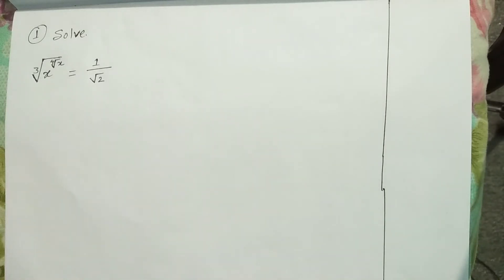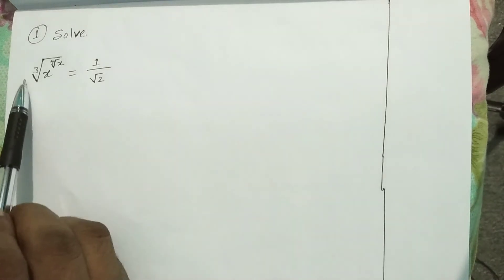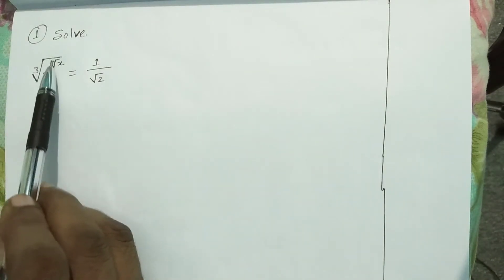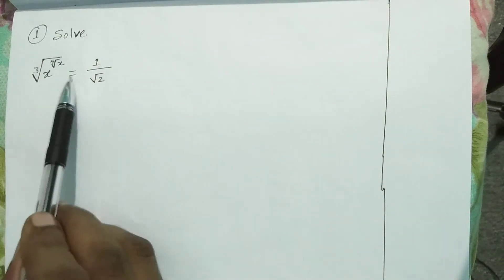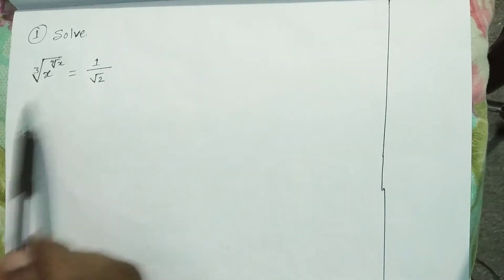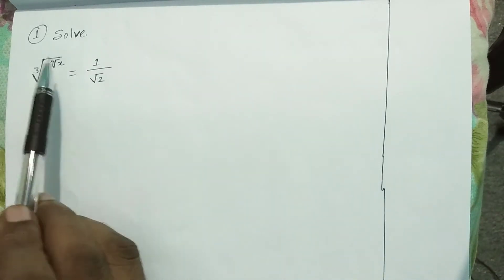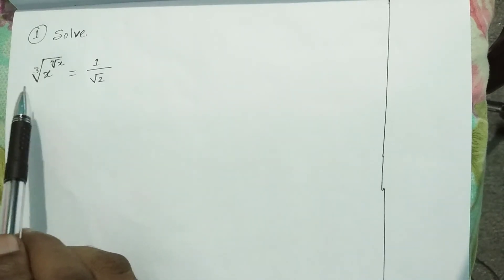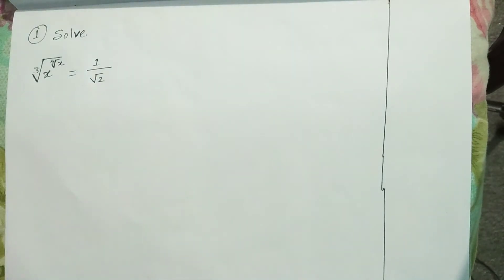Hello guys, welcome to my channel Hardest Math. It's me Vinesh Kumar Mandol, and today I came with a new question. The question is: cube root of x raised to the power fourth root of x, is equal to 1 by root 2. We are asked to solve for x. If you'd like to give this problem a try, pause the video; whenever you are ready, keep watching.